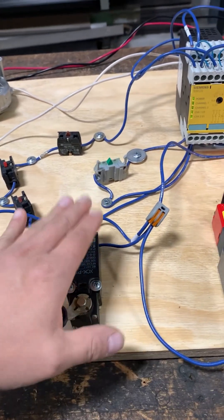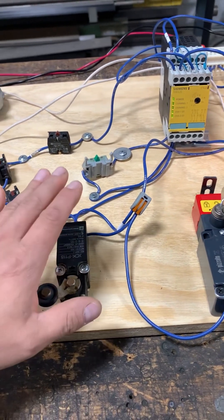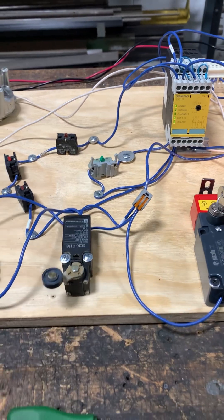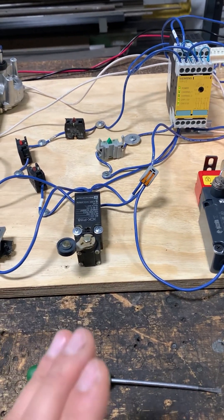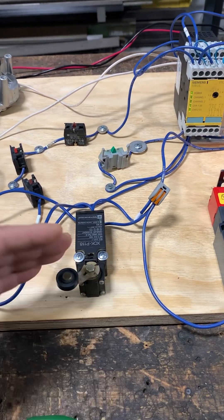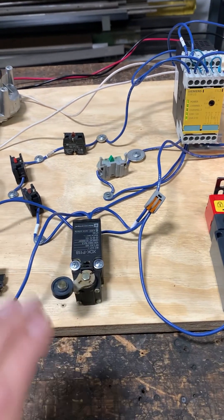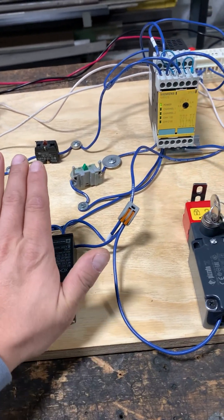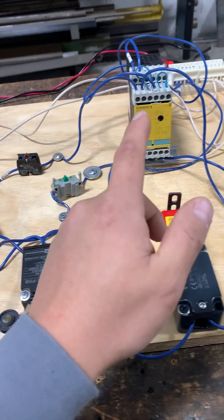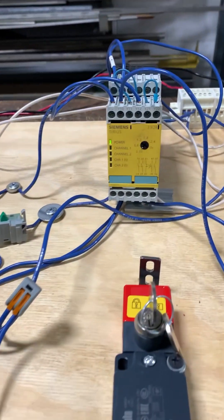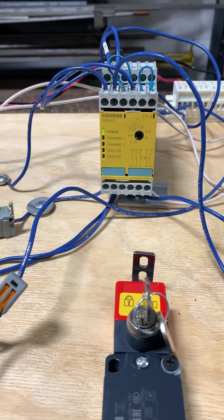And here is a limit switch that acts as an over-travel for the machine. So let's say that there's something that is never supposed to pass beyond this point on the machine. If something would come and hit it, it's going to trigger the safety relay to shut itself off.